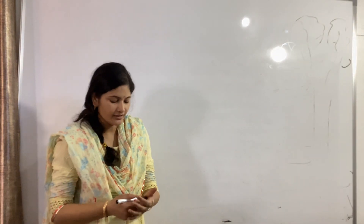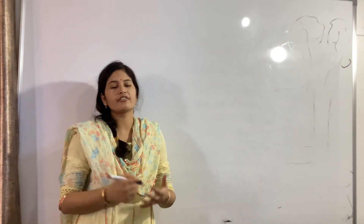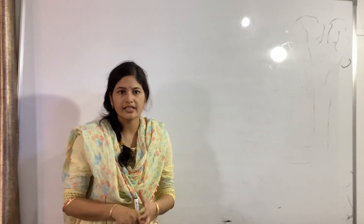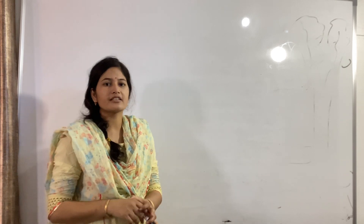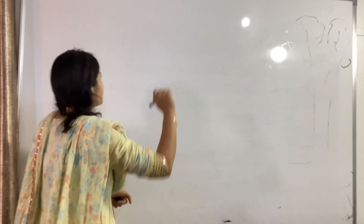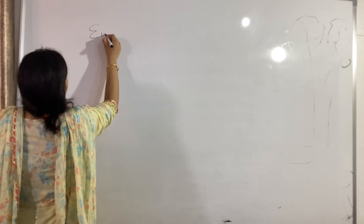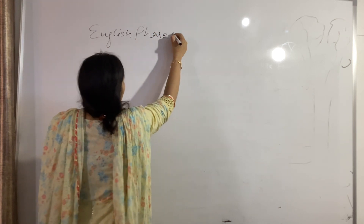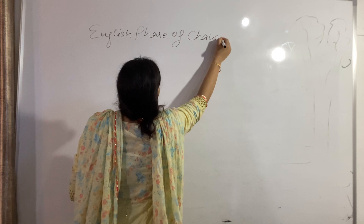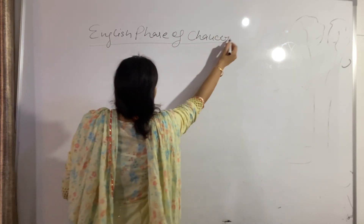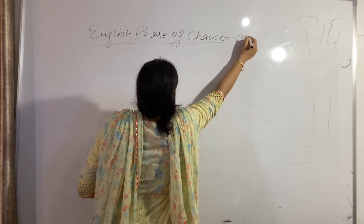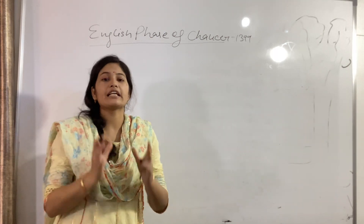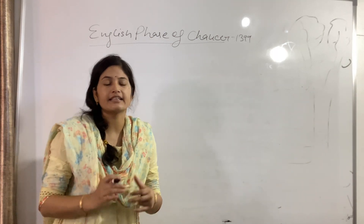Hello everyone, welcome back. We were continuously doing the Italian phase of Geoffrey Chaucer. Last class we completed the Italian phase. Now let's begin the next and last phase — the English phase of Geoffrey Chaucer. Geoffrey Chaucer's English phase begins from 1399, and it has only one major work, that is the Canterbury Tales.